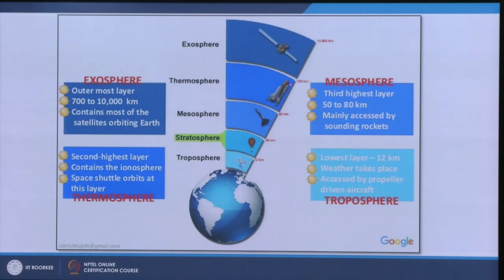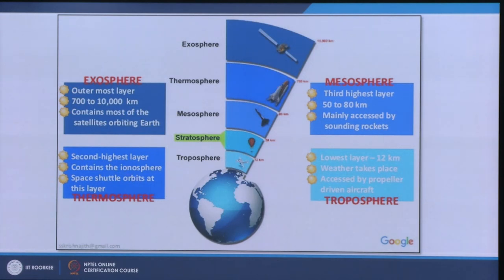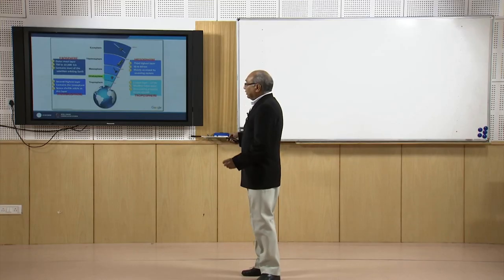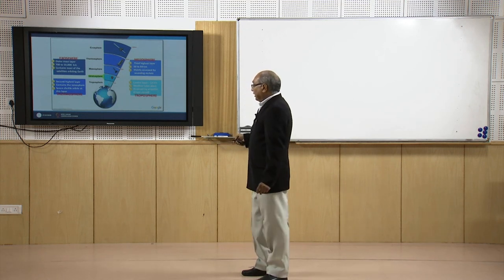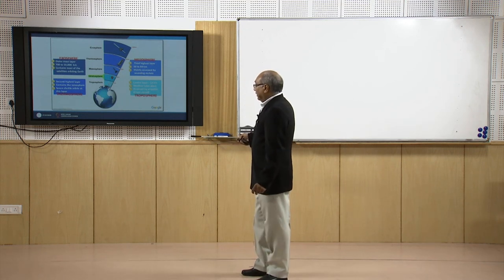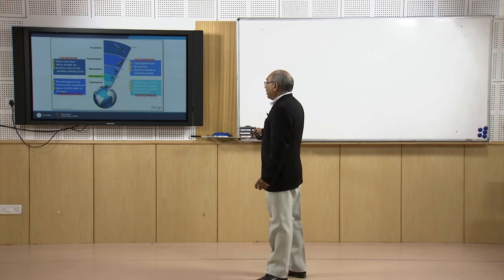The thermosphere is the second highest layer and contains the ionosphere; the space shuttle orbits at this layer. Data acquired by shuttle missions like the Shuttle Radar Topographic Mission, which used SAR interferometry to create a digital elevation model of the globe, was acquired from satellites flying in that part of the atmosphere.